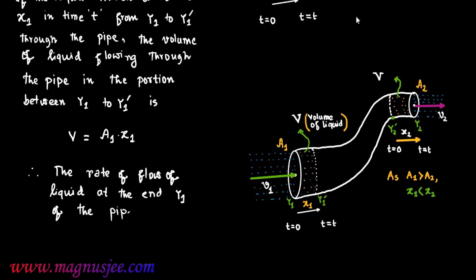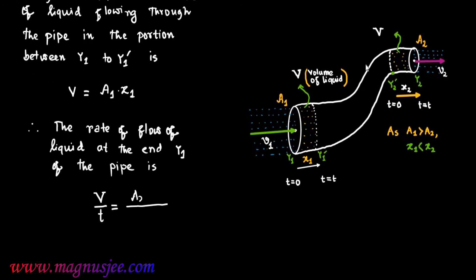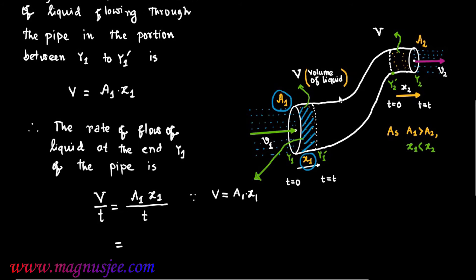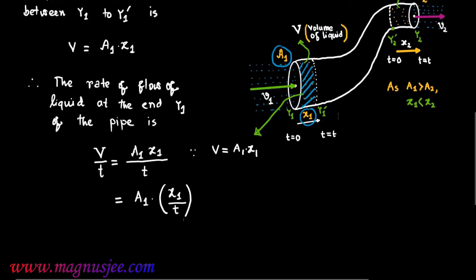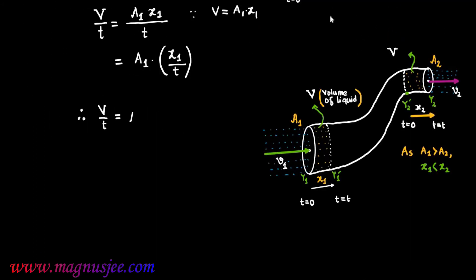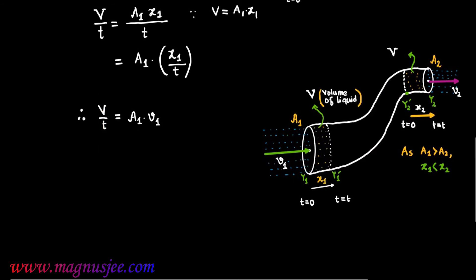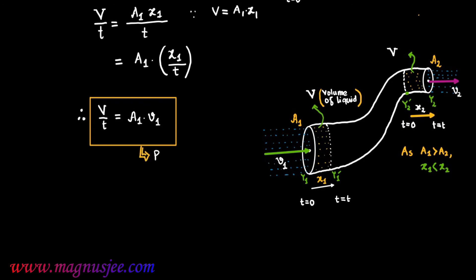Therefore, the rate of flow of liquid at end Y1 of the pipe is given by V/t = A1·X1/t, since V = A1·X1. We can write A1·(X1/t), and therefore V/t = A1·V1, where V1 is the velocity with which liquid flows into the pipe through end Y1. This gives the rate of flow of liquid — that is, the volume of liquid flowing per second through end Y1 of the pipe: V/t = A1·V1. This is Equation 1.